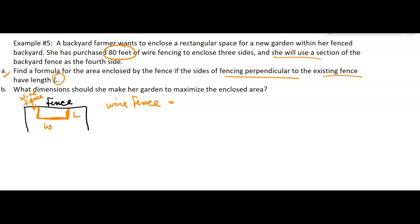So my wire fence is two lengths plus one width according to the diagram and what they told me. The key word was perpendicular here. I know how much fence I have, 80 feet, so 80 feet has to equal two lengths plus a width.